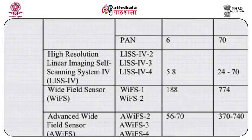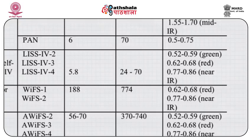Come to LISS 4. It has channels LISS 4-2, 4-3, and 4. The spatial resolution is 5.8 meters. The spectral resolution covers 0.5–0.59 for green, 0.6–0.68 red, and 0.77–0.86 near IR.